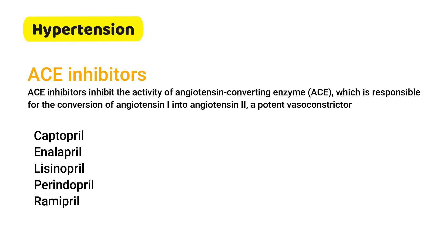ACE inhibitors inhibit the activity of angiotensin-converting enzyme, which is responsible for the conversion of angiotensin 1 into angiotensin 2, a potent vasoconstrictor. These include captopril, enalapril, lisinopril, perindopril, and ramipril. ACE inhibitors are more effective at slowing down the decline of kidney function.